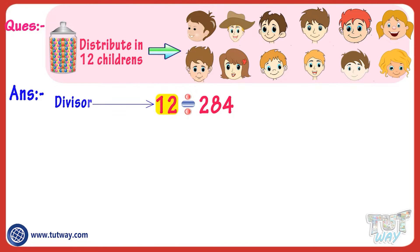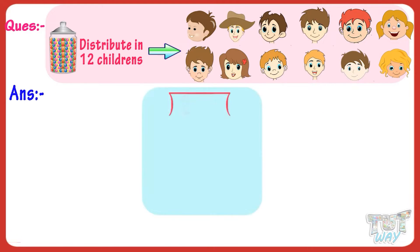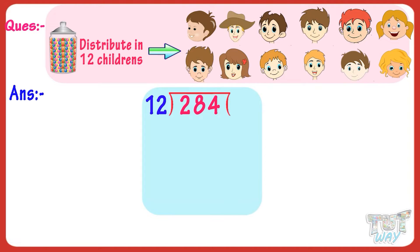12 is a divisor and 284 is our dividend. We can write them like this. Now, the first digit of the dividend is less than the divisor, which is 12.